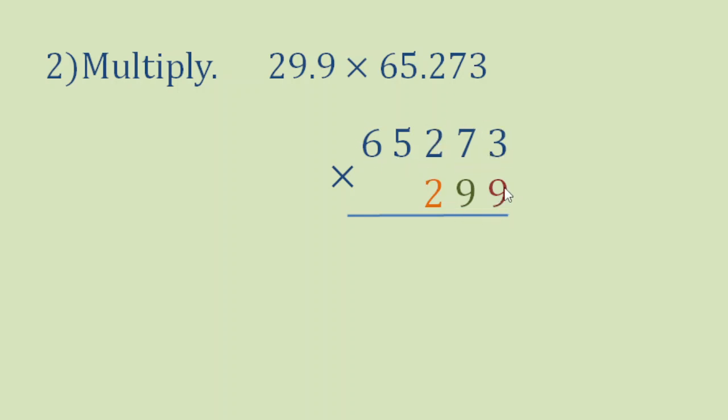Let's start multiplying. 9 times 3 is 27. Bring down 7, carry 2. 9 times 7 is 63, plus 2, 65. Bring down 5, carry 6. 9 times 2 is 18, plus 6 is 24. Bring down 4, carry 2.